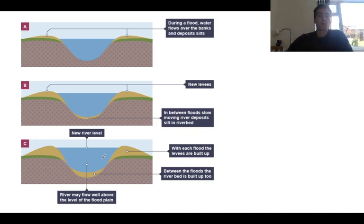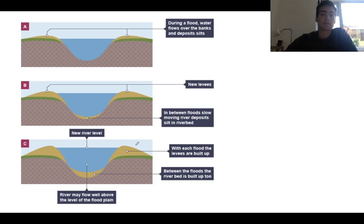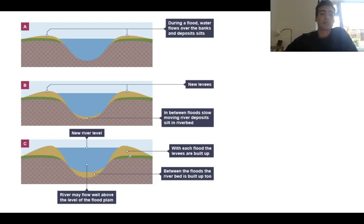What we do, especially in towns, is make artificial levees. We build river banks using soil and earth, but we also might make levees out of concrete to make them really strong, so the river can basically hold more water and stop flooding.